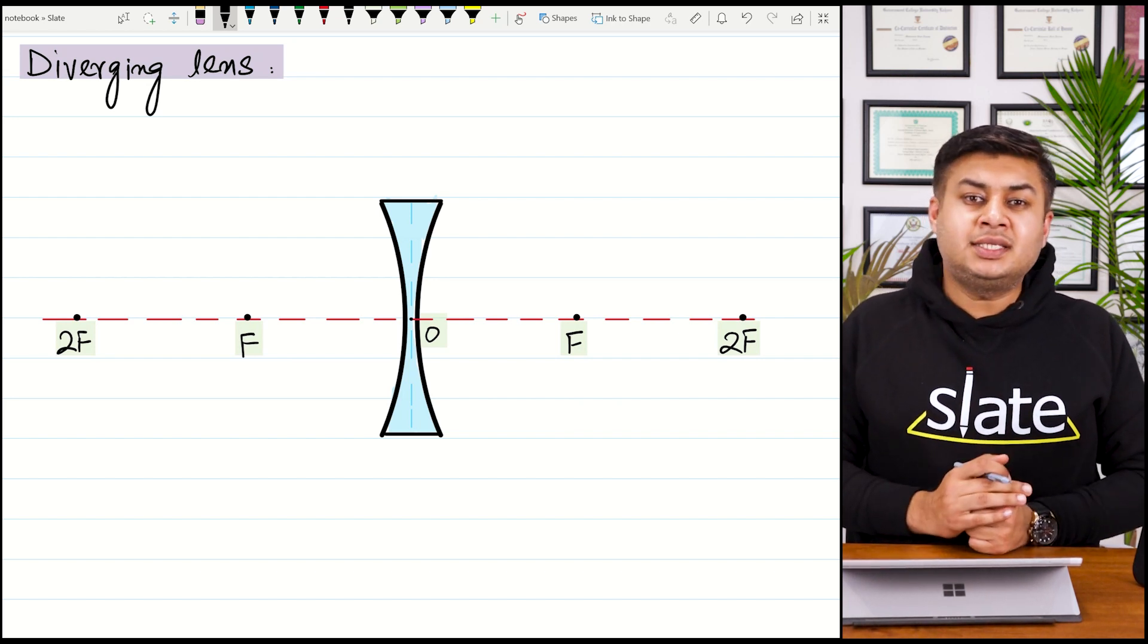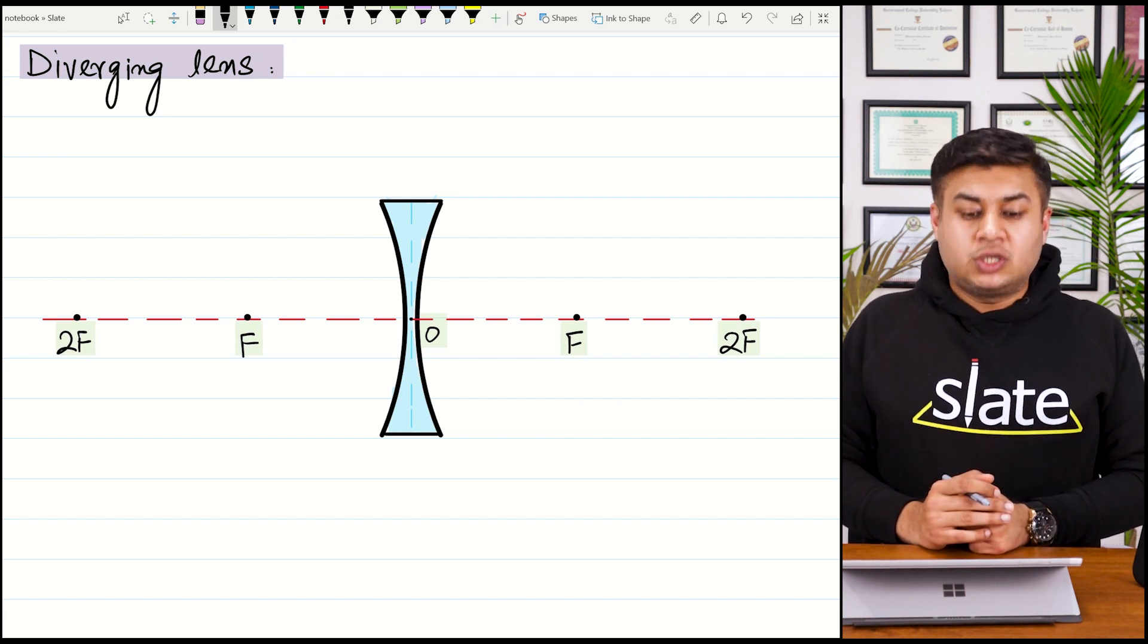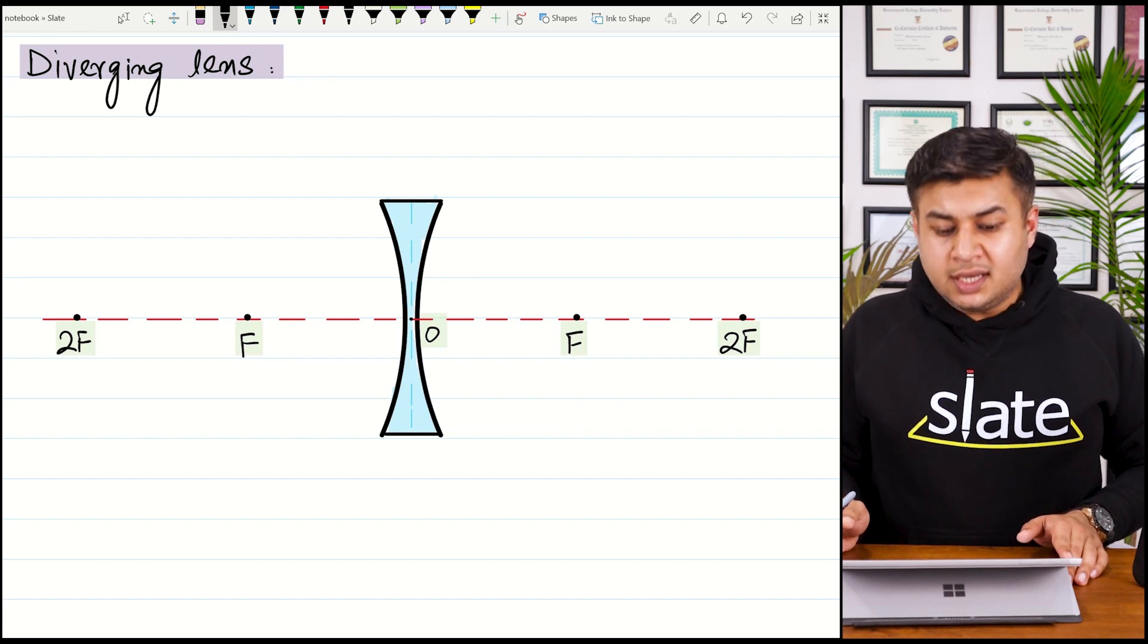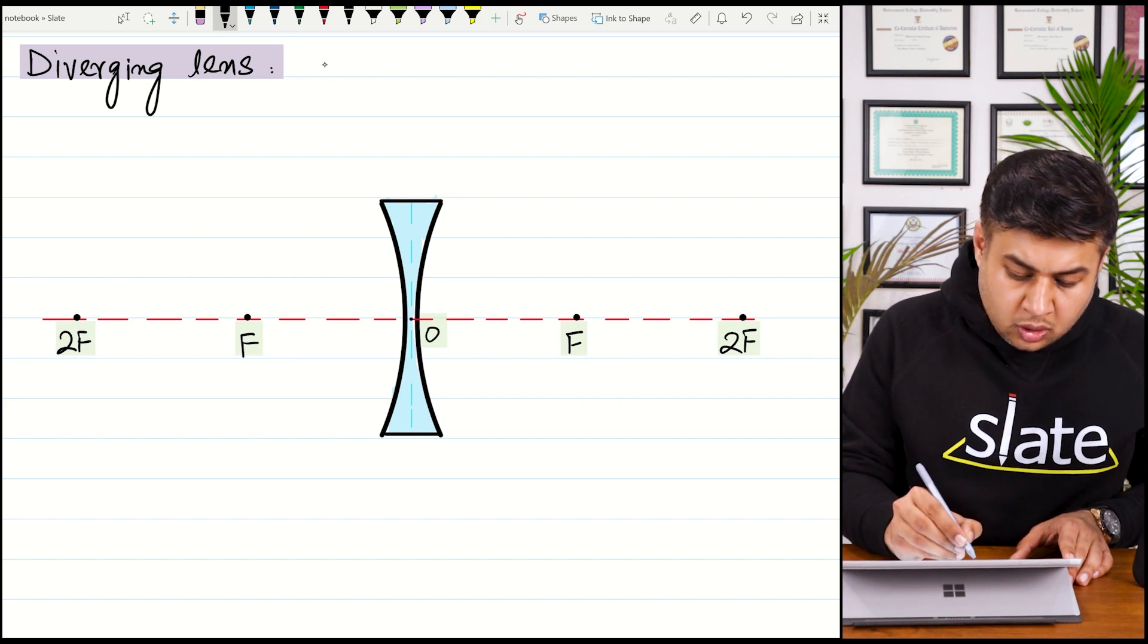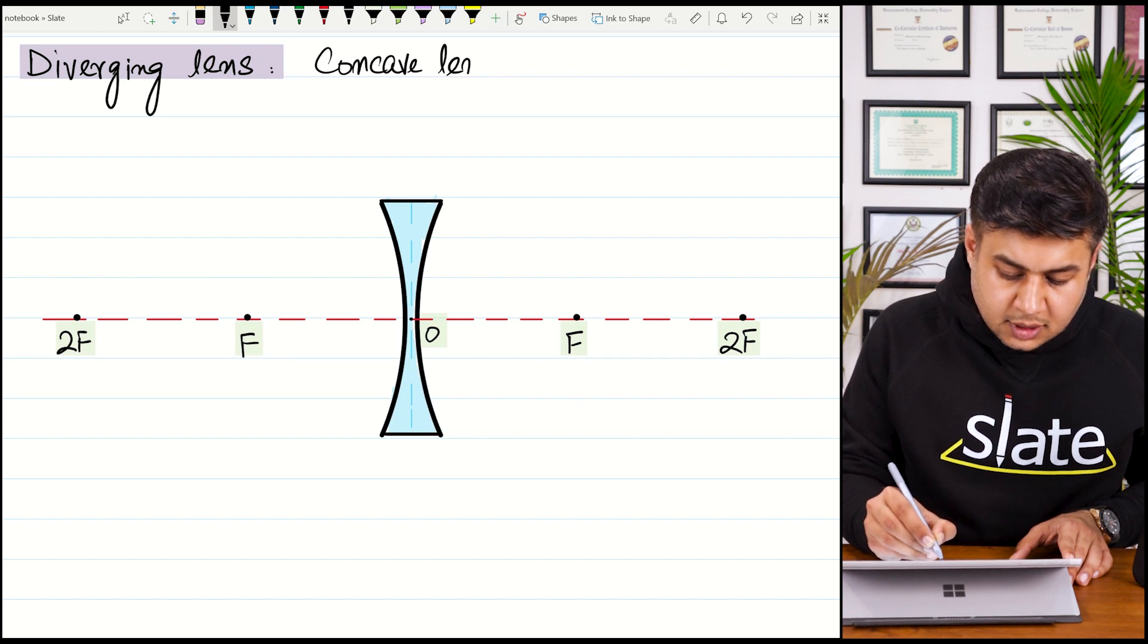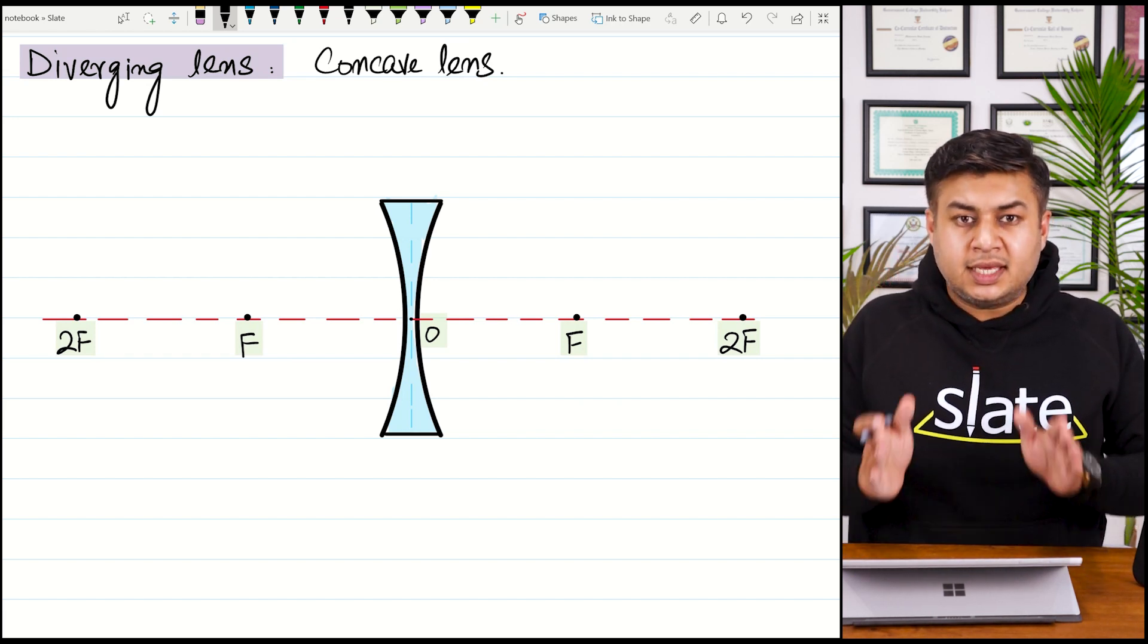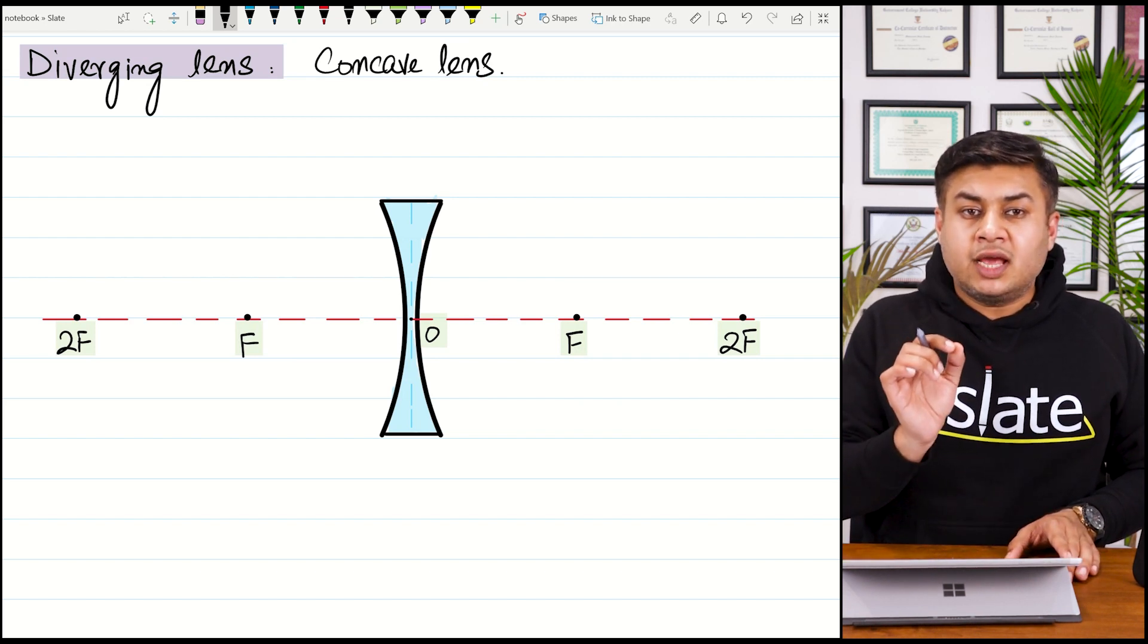Before diverging lens, we have covered converging lens and five different cases of ray diagrams. Before watching this video, you must watch that video. So we have a diverging lens in front of you in side view. Diverging lens is also called concave lens because its surfaces are concave.